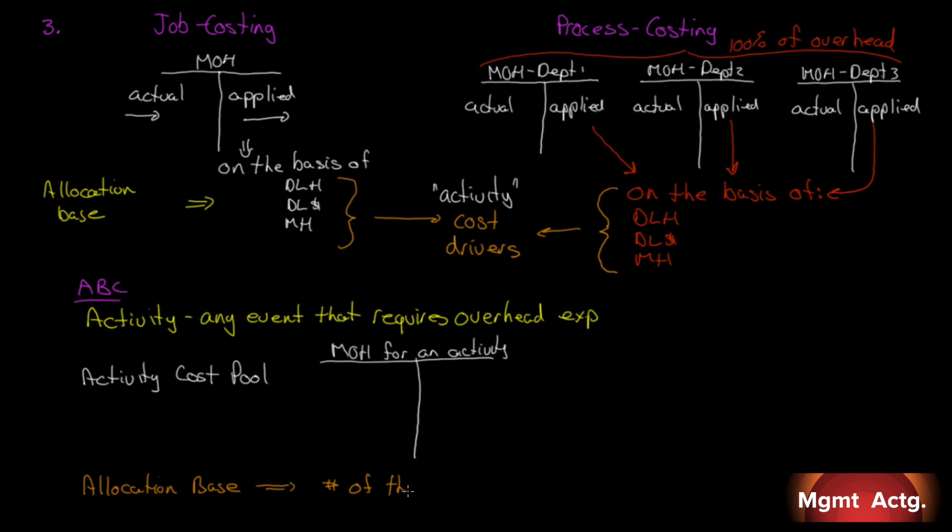so that when we look at process costing with a different manufacturing overhead T account for each department, you can conceive of each activity having a different manufacturing overhead account. Think of that as the activity cost pool. And the allocation base that we apply the overhead on is the number of the activity, whatever that activity is. So, it's a manufacturing overhead for a particular activity. Whatever that activity happens to be, we count the number of that activity.